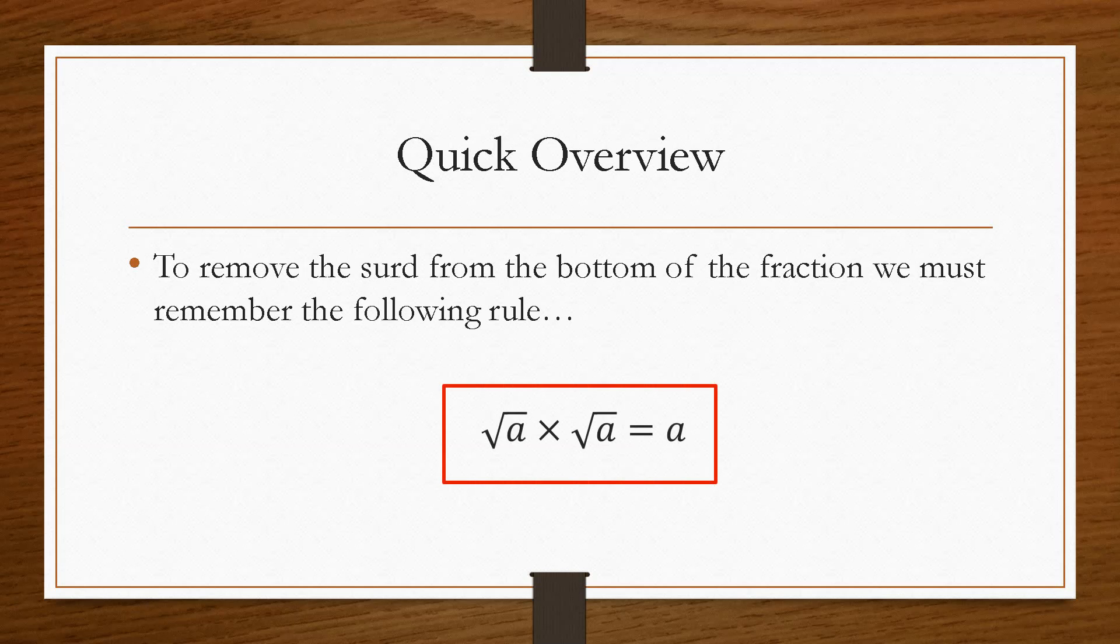that a surd multiplied by itself, i.e. the exact same thing, will leave the value underneath the square root sign. The square root sign will disappear. And that's the rule that we want to exploit when we are rationalising the denominator.